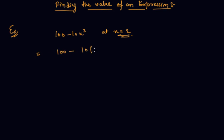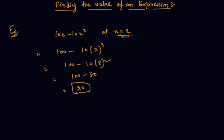Directly putting the value of x as 2: this is 100 minus 10 into 8. So this will be 100 minus 80. 2 cubed is 8, so 100 minus 80 is 20. So 20 is the value of the expression at x equal to 2.